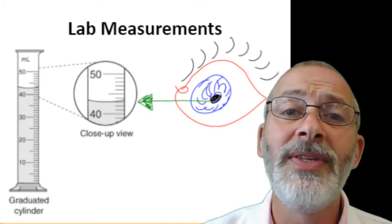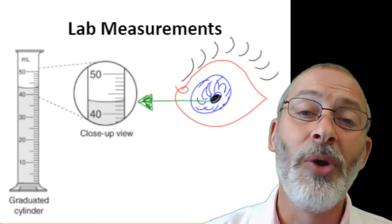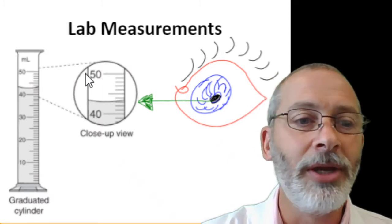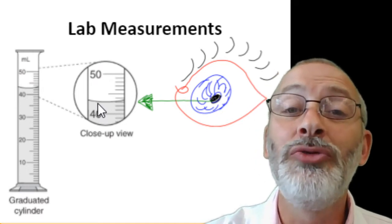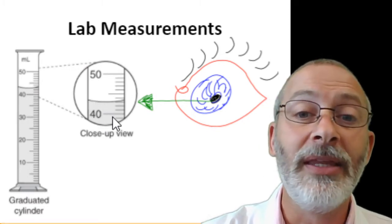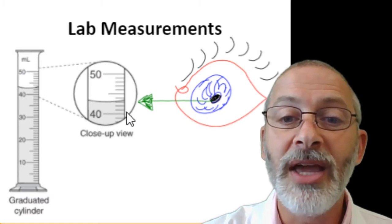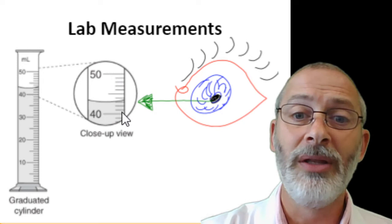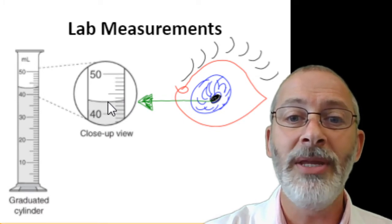Another important thing to keep in mind is that your graduate must be placed on a level surface like your tabletop or your sink counter, because if you're holding it at an angle, the meniscus is going to move. Looking straight at the level of the liquid inside the graduate, we're going to read this the same way we read a ruler. Here's the liquid — the gray part. Here is 40 and the units are milliliters, so this line is 40 milliliters, and this line here is 50 milliliters.